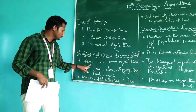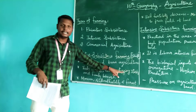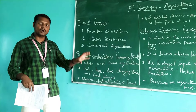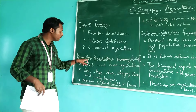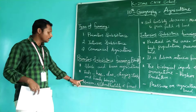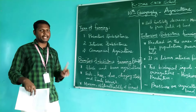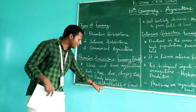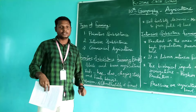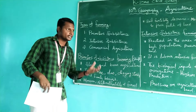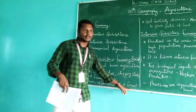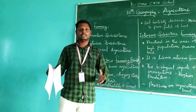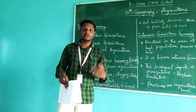The tools they use are hoe, digging sticks, and family labor. These practices depend on suitable monsoon climate, natural soil fertility, and the forest area where trees are present — they cut them down, burn them, and then do cultivation.